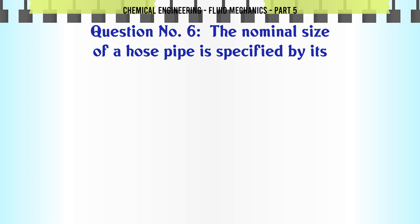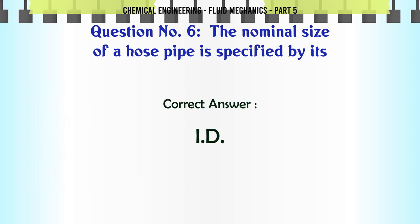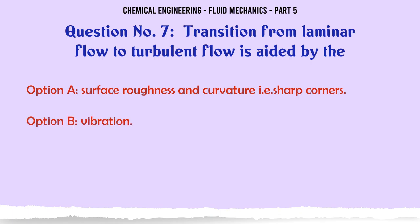The nominal size of a hose pipe is specified by its: a) i.d., b) o.d., c) thickness, d) none of these. The correct answer is i.d.